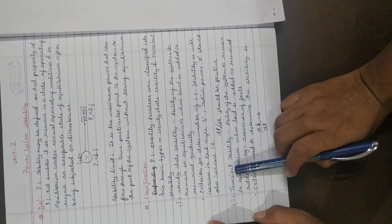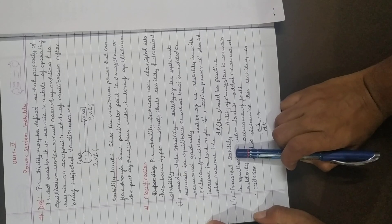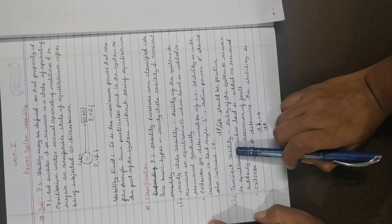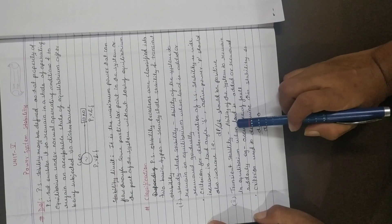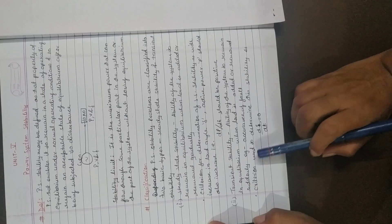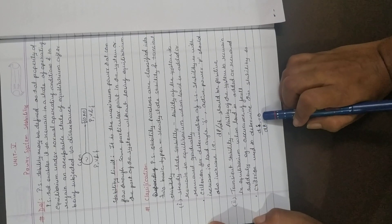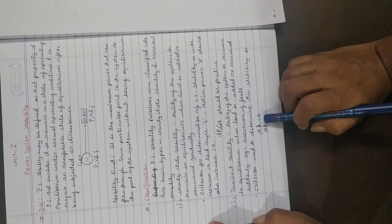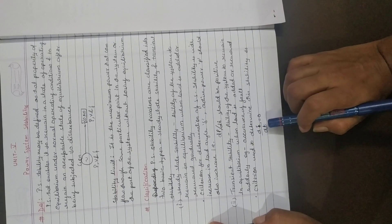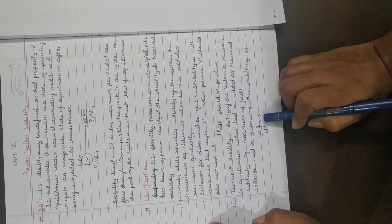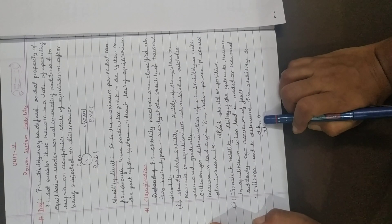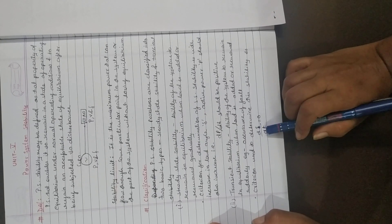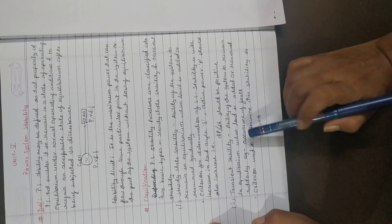For transient stability, if the load is added or removed suddenly and after that sudden addition or removal the system remains stable, the power system is said to be transiently stable. The criteria for this is that dδ/dt should be equal to zero, where delta is the load angle. With the sudden addition or removal of load, there will be oscillation of the rotor about a new steady state position, and if these oscillations die out within a specified time — that is, dδ/dt equals zero — then the system is said to be transiently stable.